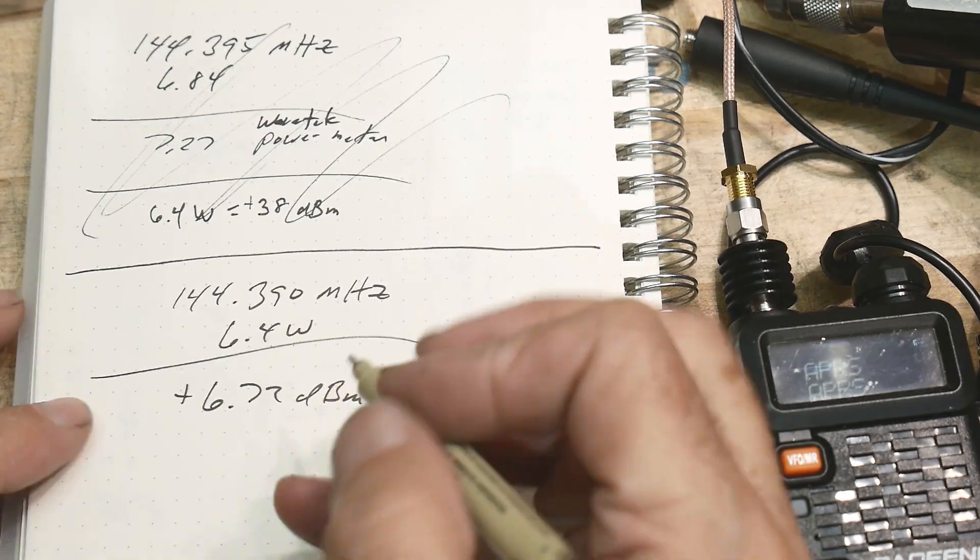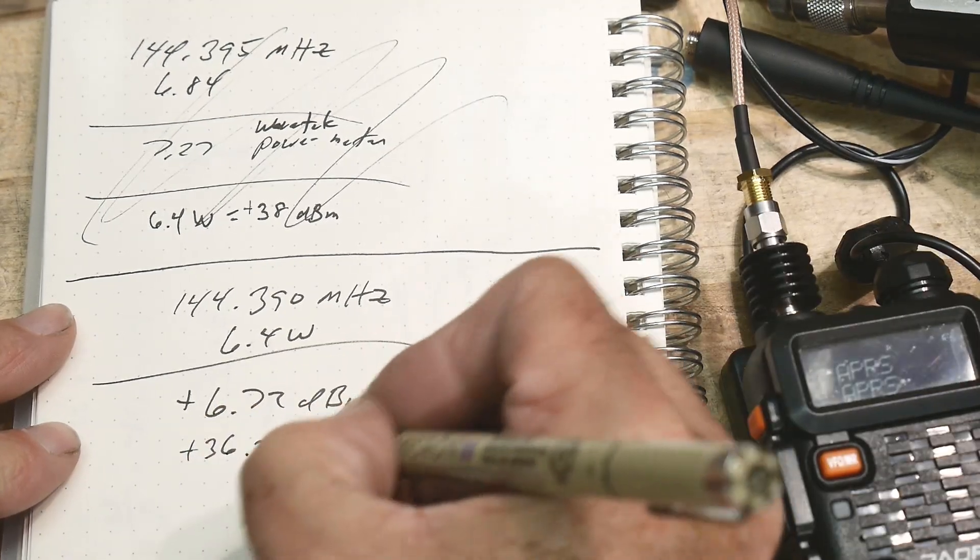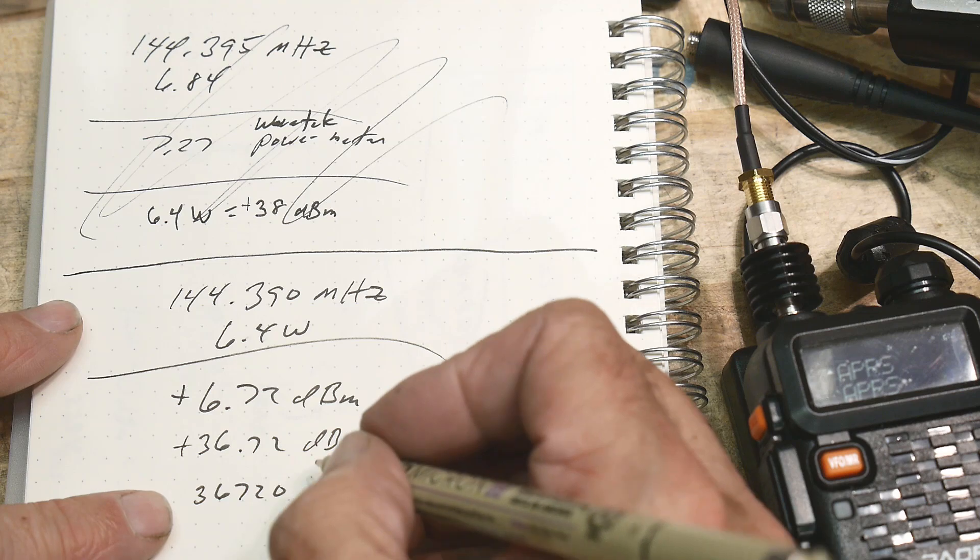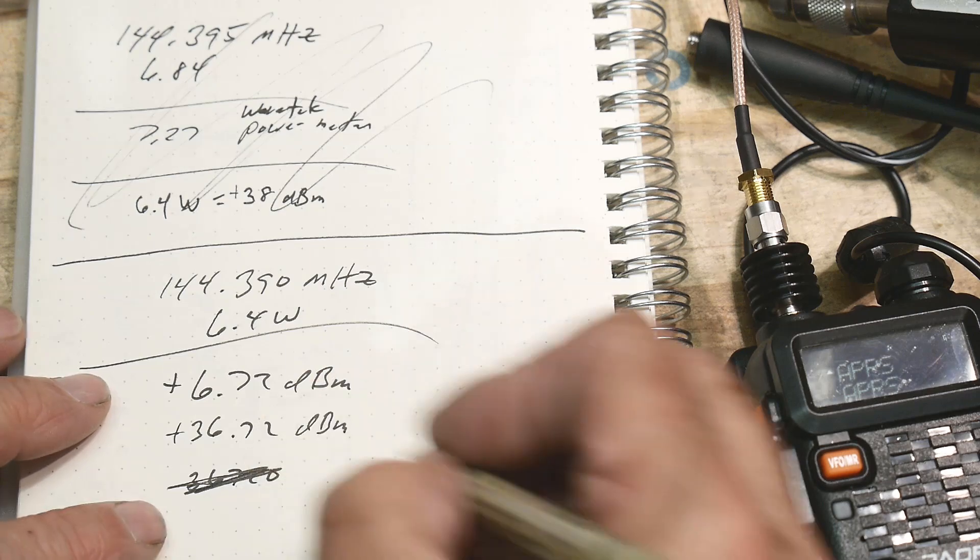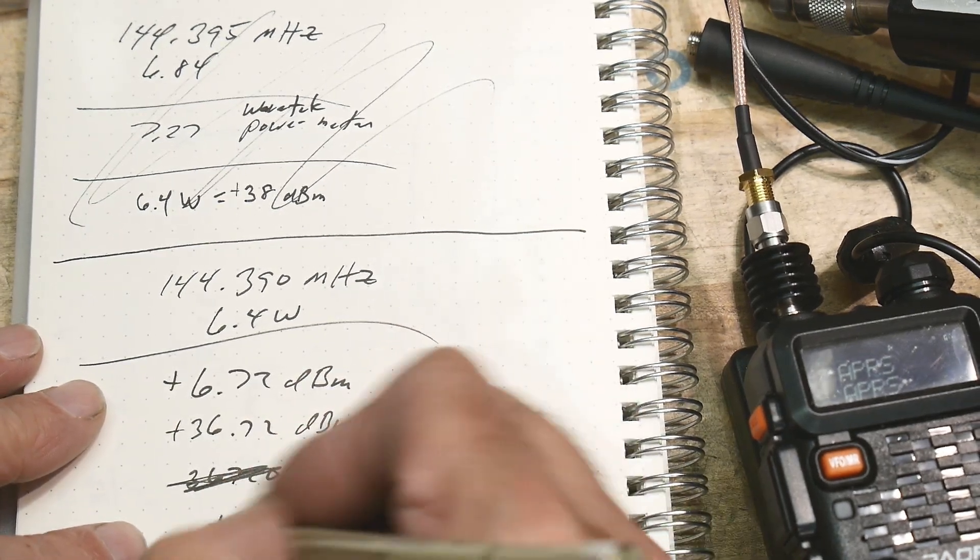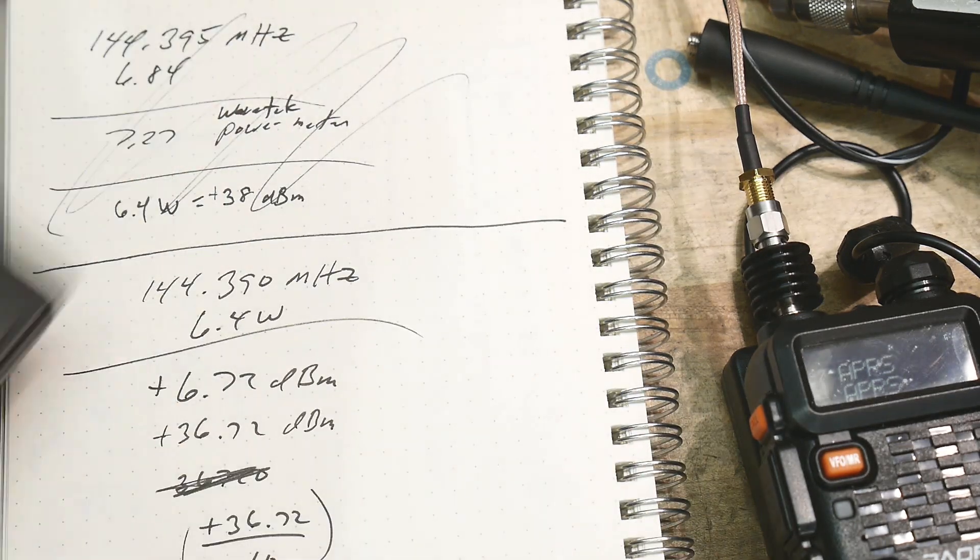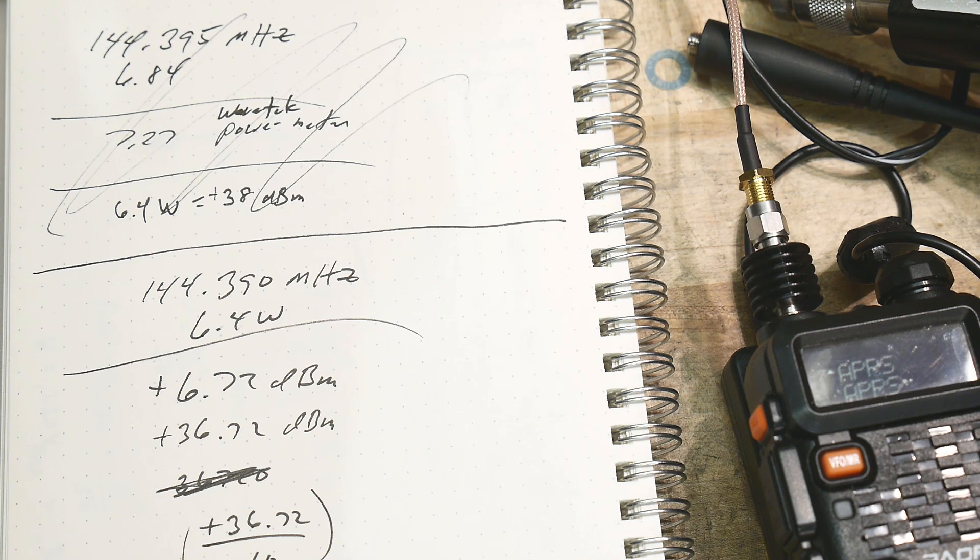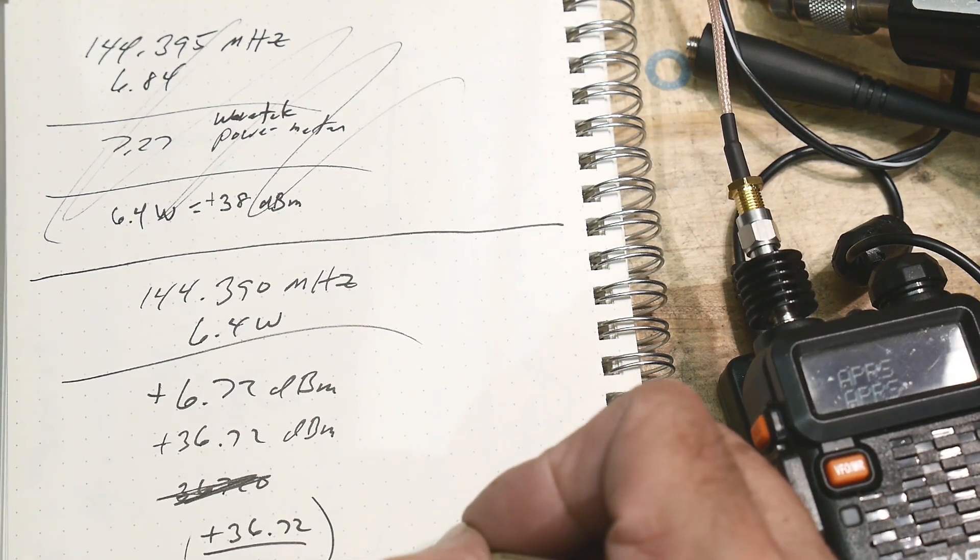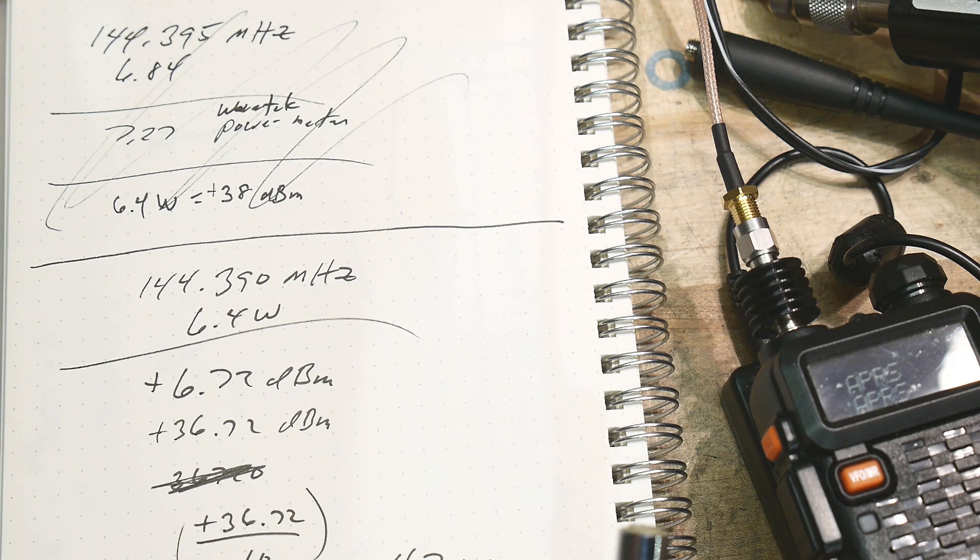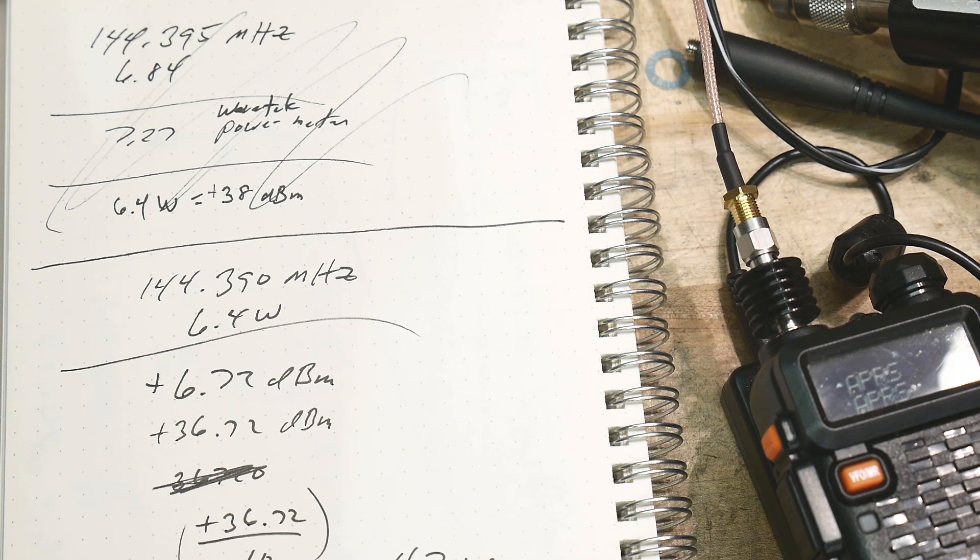So let's convert this to watts. So in order to convert from watts, we need to add the 30 dB pad. So this is actually plus 36.72 dBm. So in order to convert this, we'll do plus 36.72. We'll divide it by 10. And then we're going to raise this to the 10. And that will give us milliwatts. So 36.72 divided by 10 raised to the 10 is 4.7 watts. So this measures 6.4 watts. This is measuring 4.7 watts. Wow. That's a big difference. That is a very, very big difference.